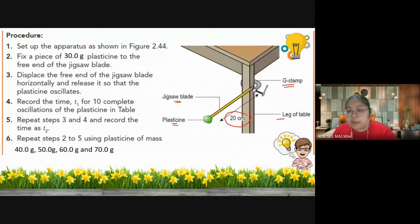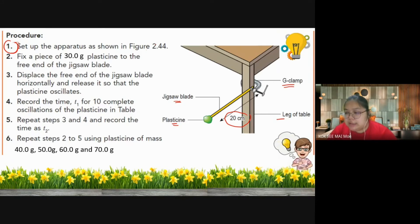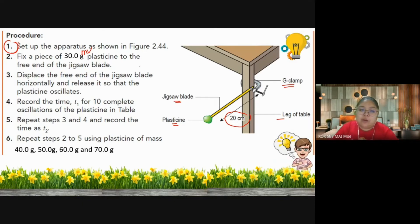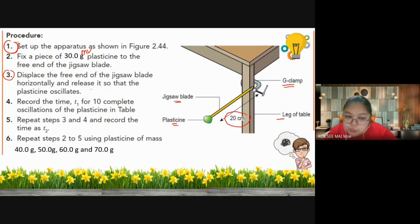The drawing is important because the first sentence of your procedure only needs to say 'apparatus set up as above diagram' - no need to explain how to clamp or set the distance, since it's all in the diagram. For the procedure: mention the manipulated variable - state how many grams of plasticine to put at the end of the hacksaw blade. Then displace the free end of the hacksaw blade horizontally and release it so the plasticine oscillates.